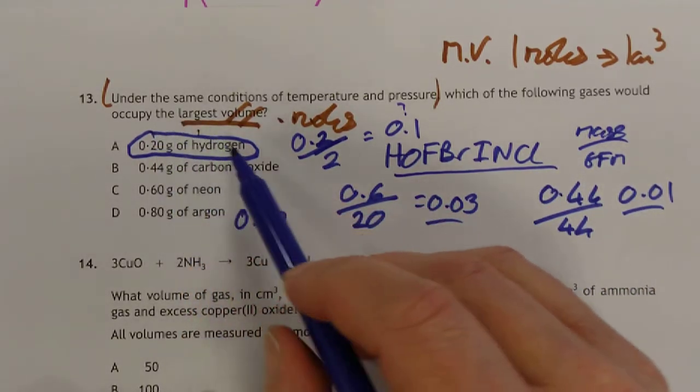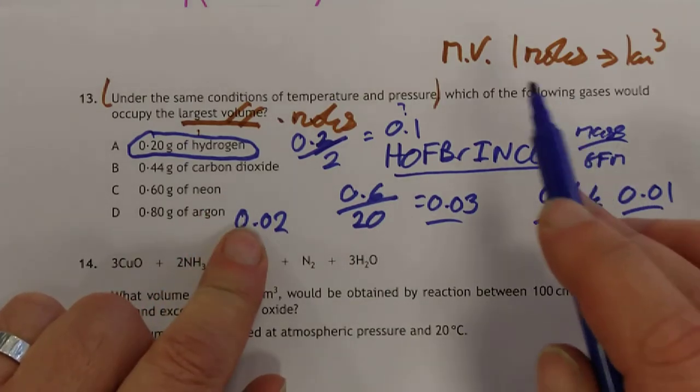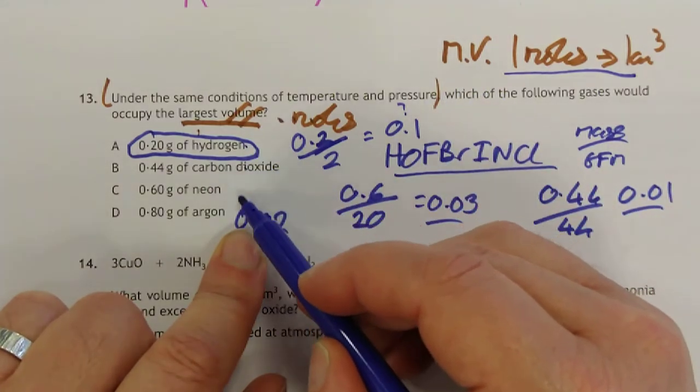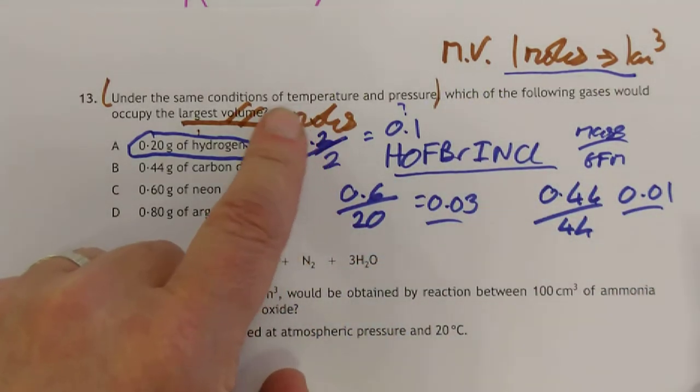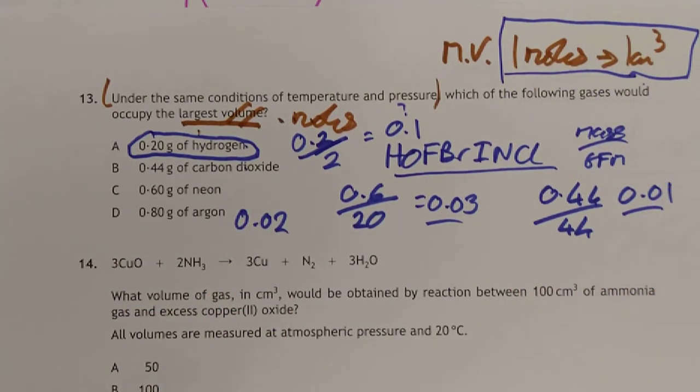So there you go, folks. Turn all your gases into moles, and then your moles are proportional to the volume, because the molar volume for all of these gases is identical. And even if you don't know the molar volume, it doesn't matter. You can just go with proportionality, and out pops your answer.